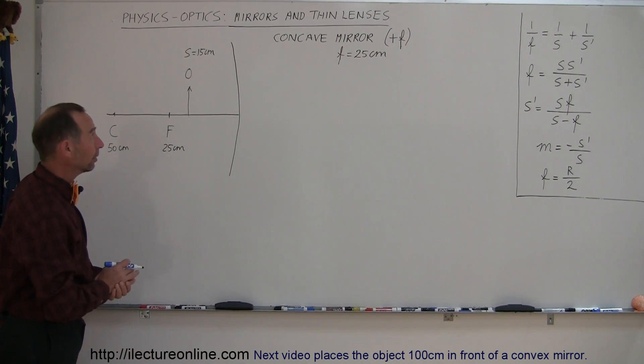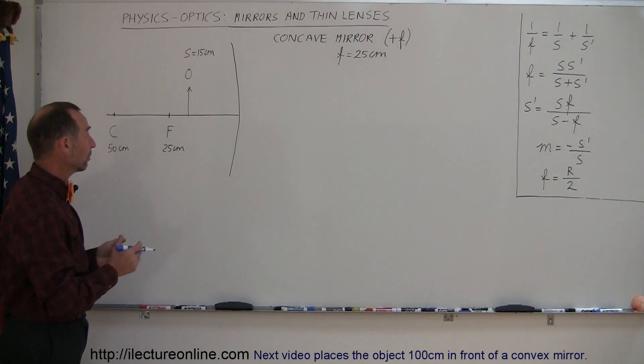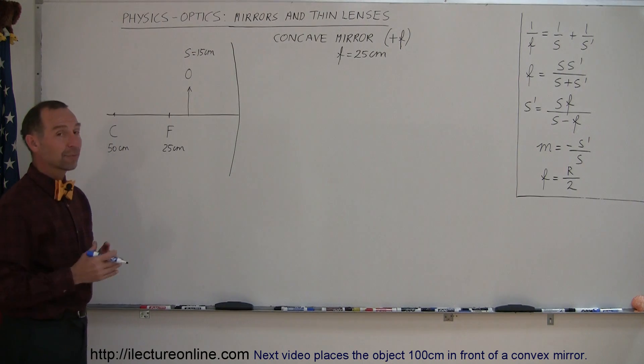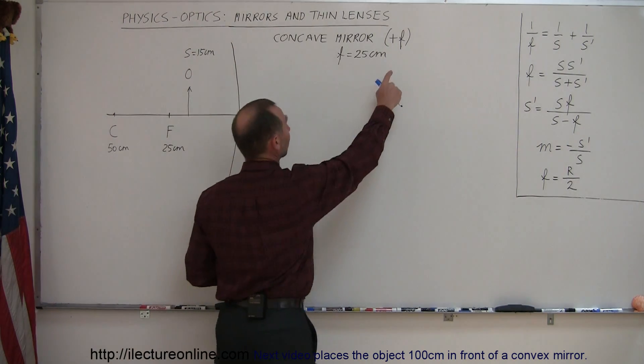And now here's our third example of how you find the image when you place an object in front of a concave mirror. Again, concave mirrors have positive focal lengths.